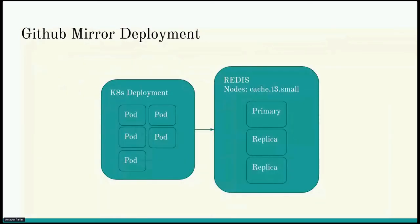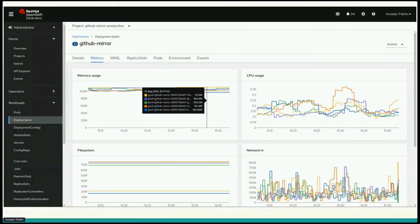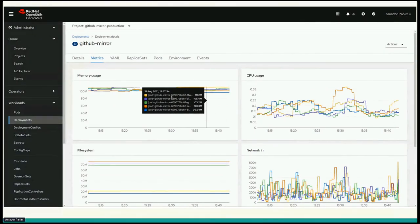The deployment of the GitHub Mirror service is a simple Kubernetes deployment — we use the GitOps repository to define everything needed for that service. It has five replicas and uses a Redis backend with ElastiCache on AWS: three cache nodes, t3.small, one primary and two replicas. Here's a sneak peek into the OpenShift console for the GitHub Mirror deployment: five pods, each using about 100 megabytes of memory with a very low CPU footprint. It's a very slim service, easy to run, and scales well — you can have any number of replicas with no hard constraint.